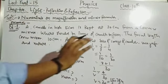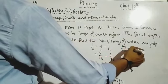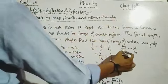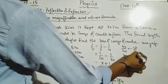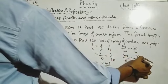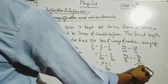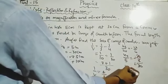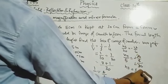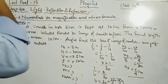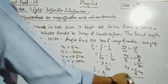Since v is positive, the nature of the image is virtual. Now finding hi: using hi/h₀ = -v/u. So hi/5 = -(30/4)/(-30) = (30/4)/30. The 30s cancel and the negatives cancel: hi/5 = 1/4. Therefore hi = 5/4 = 1.25 cm. Height of image is 5/4 cm, which is positive, confirming the image is erect.